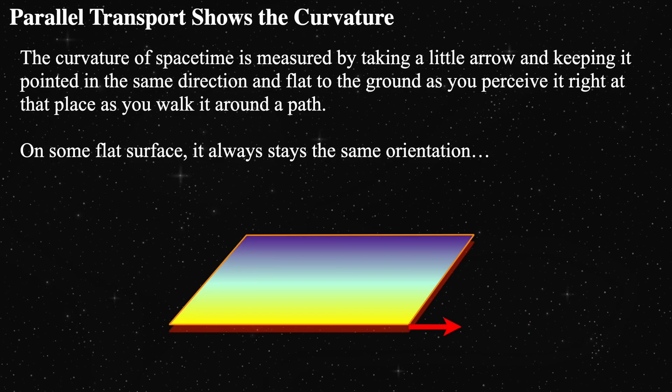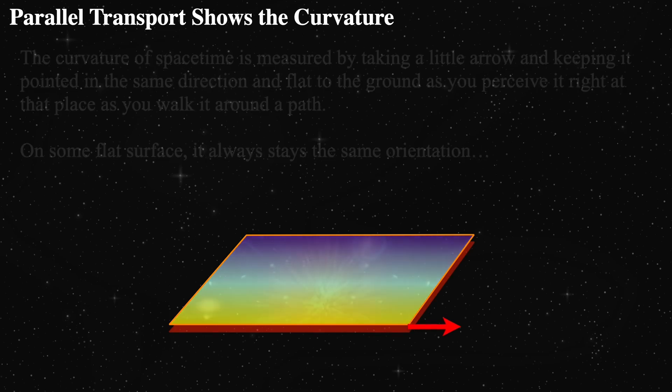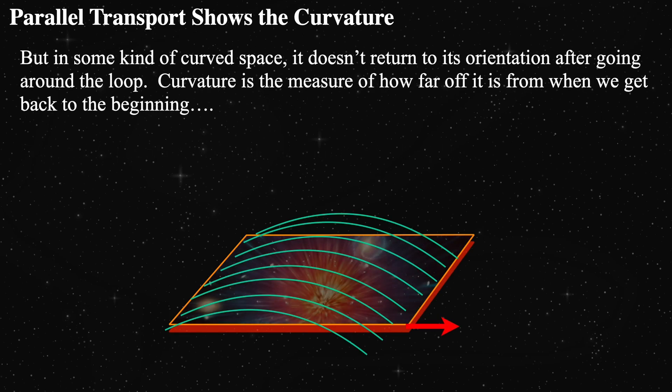We can then define the curvature of a space to be the amount of deviation, if any, that a parallel transported arrow endures as it is transported around a closed loop. In a flat space, the arrow will always stay pointed in the same direction, never leaving its orientation. This is exactly the same as pushing the arrow around on a table and always keeping it pointed in the same direction. But in a curved space, the orientation of the arrow will change upon traversing a closed loop. The direction and amount of rotation determines the shape of the curved space at that point.